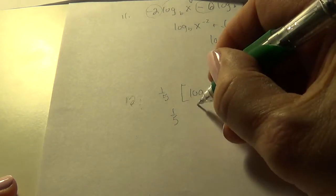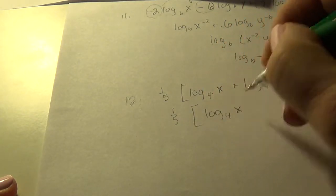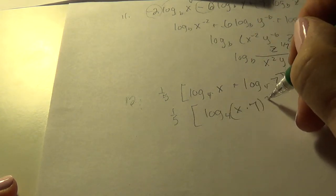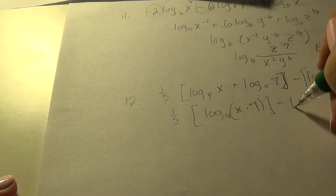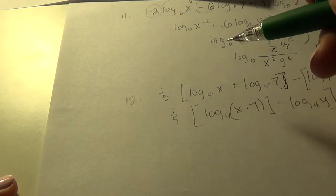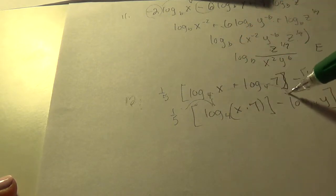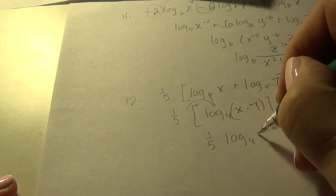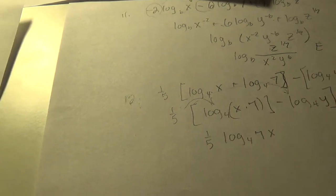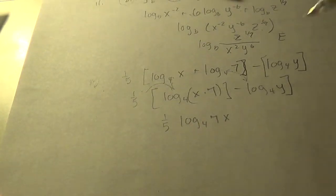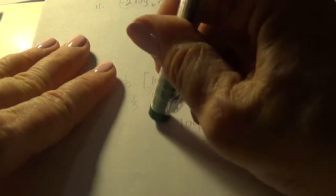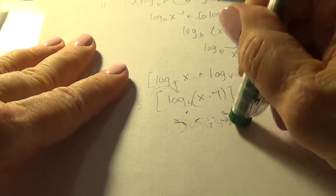So the first thing is we're going to notice inside the first set of brackets we have two logs that are added, so I can combine their arguments by multiplication. And over here, just leave that for now. So let's multiply the one-fifth through, so we get one-fifth log to the base 4 of 7x. Maybe we shouldn't do the one-fifth just yet.